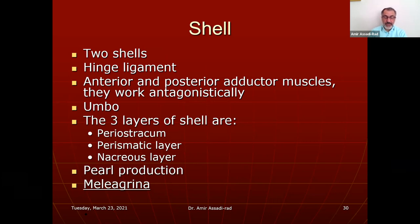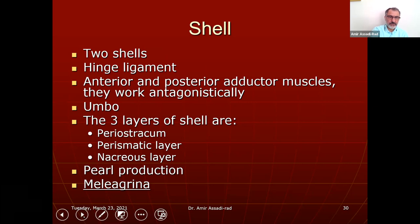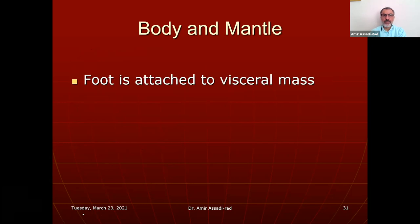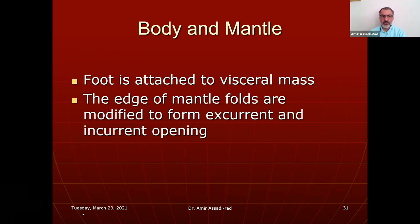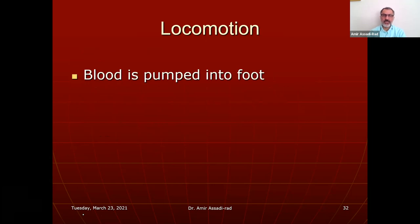Margaritifera margaritifera is the name used for Japanese pearl production. They have pearl farms — the animals are kept in cages. The edge of the mantle folds are modified to form excurrent and incurrent openings. Locomotion occurs by pumping blood into the foot and pushing against the sand.